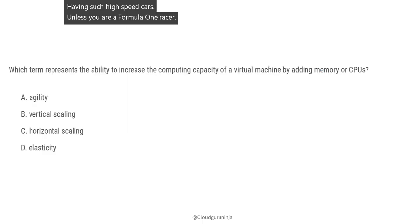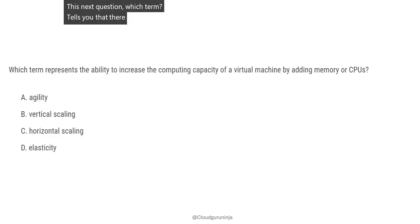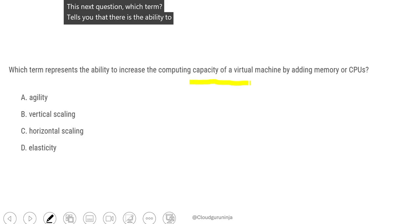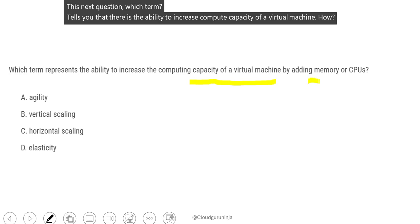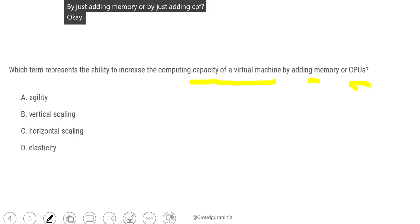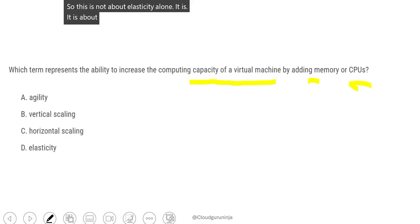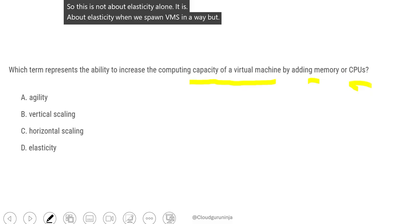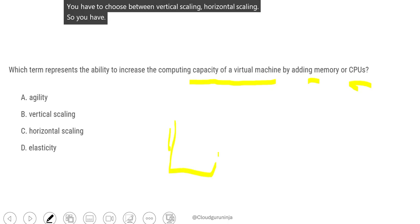Which term describes the ability to increase the compute capacity of a virtual machine by just adding memory or adding CPUs? This is not about elasticity alone. You have to choose between vertical scaling and horizontal scaling.